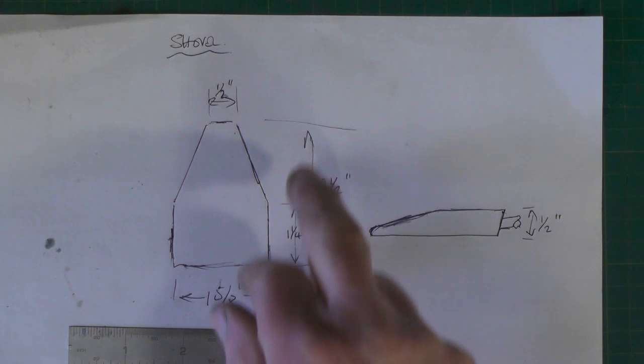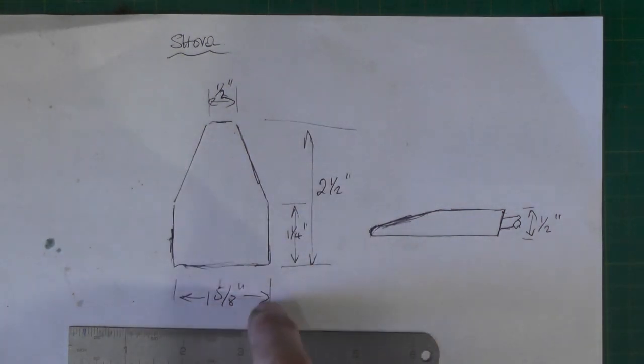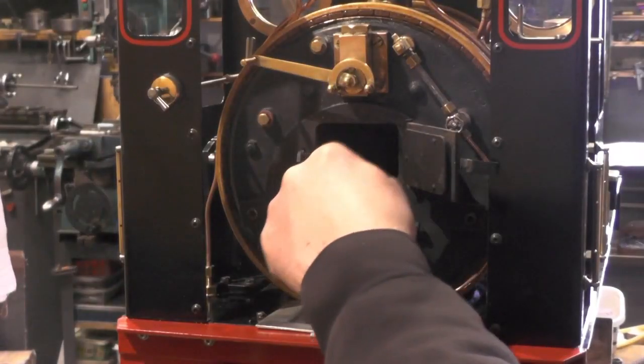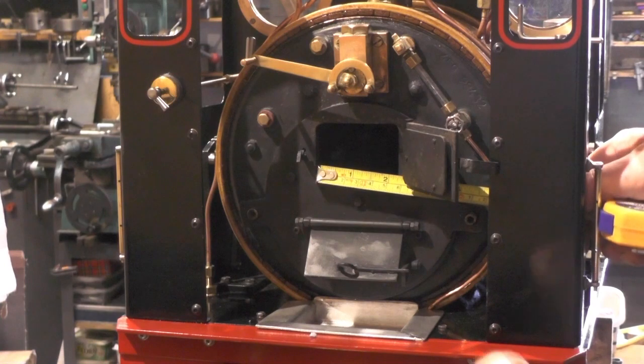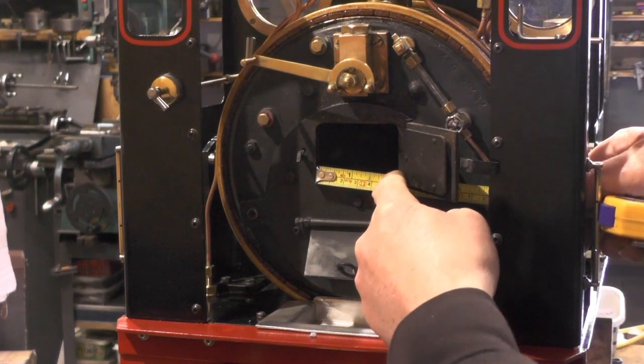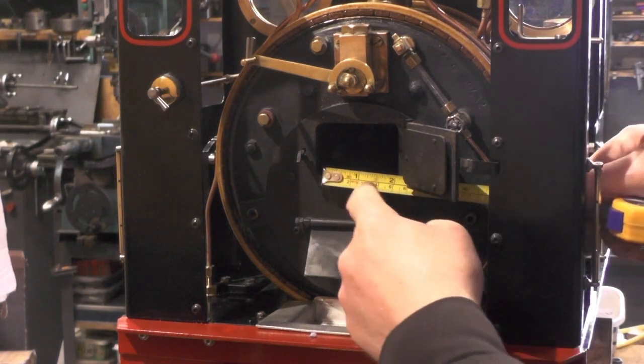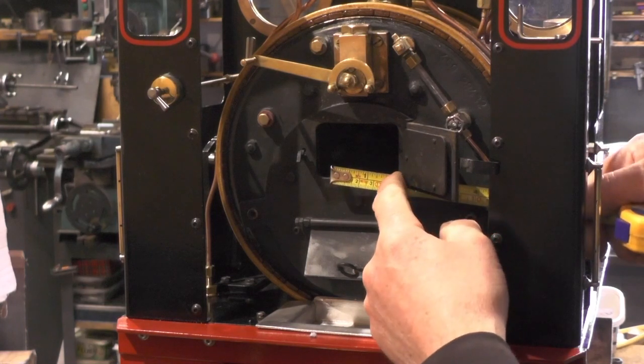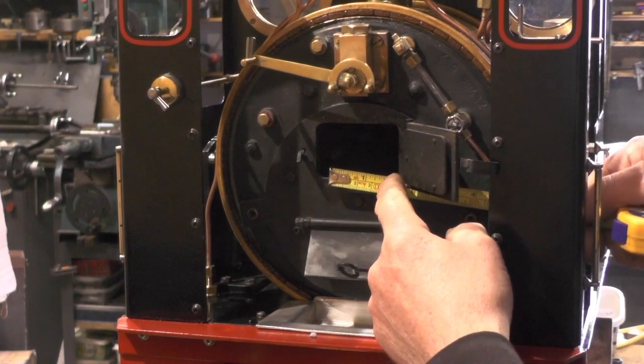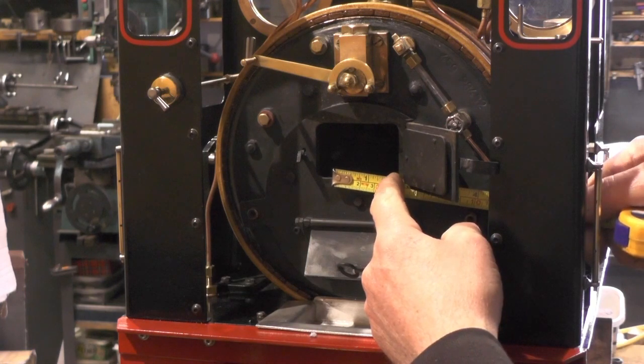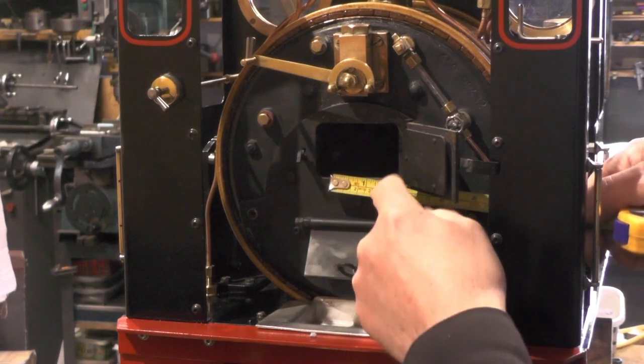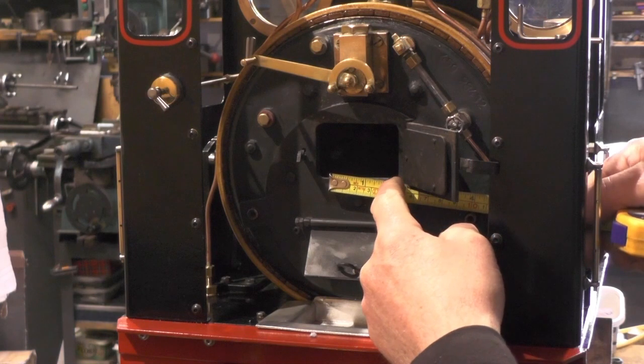So these are the sizes I've come up with: inch and five eighths wide, two and a half inch long. The actual stoking hole onto the firebox is two and a quarter on this loco, so I've just determined probably around inch and a half, inch and five eighths, just to give you enough room for plenty of play on each side.